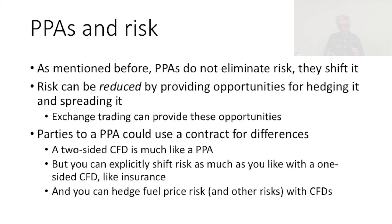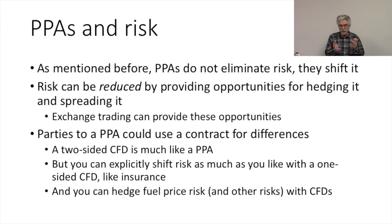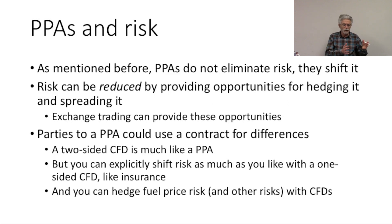We've talked before about PPAs and how they shift risk but don't eliminate risk. PPAs move risk around between parties. The risk comes from not knowing the future. We don't eliminate the risk of not knowing the future by writing a PPA. We simply move the risk, in the case of PPAs, from the generator partially over to the DISCOM. The DISCOM accepts some of the risk and that allows the generator to get financing for the plant.